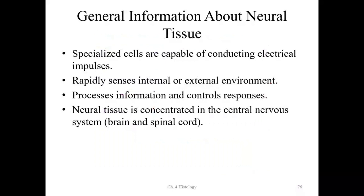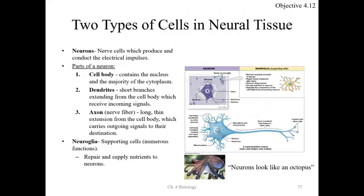Now let's talk about neural tissue. Neural tissue sends electrical impulses — it is capable of sending and conducting action potentials. It rapidly senses internal and external environments, processes information, and controls responses. It is concentrated in your central nervous system: the brain and spinal cord. There are two cell types: neurons and neuroglia.